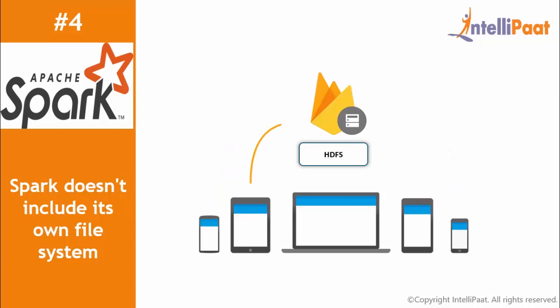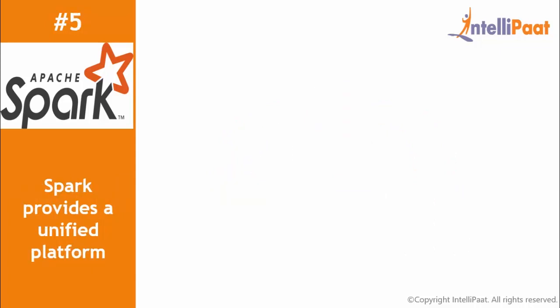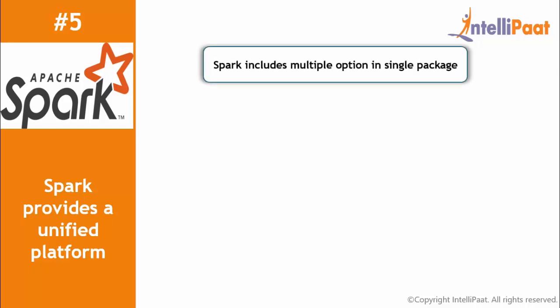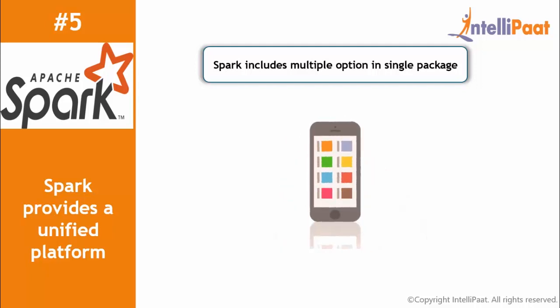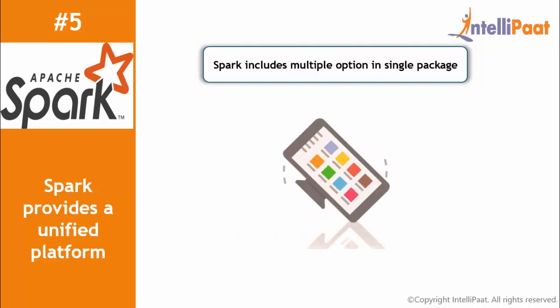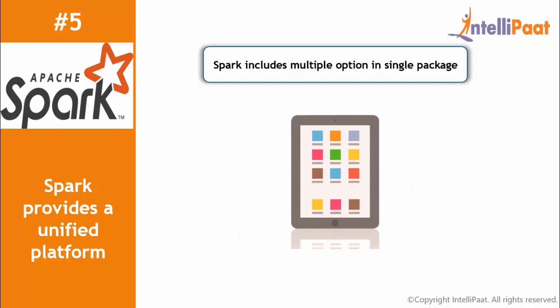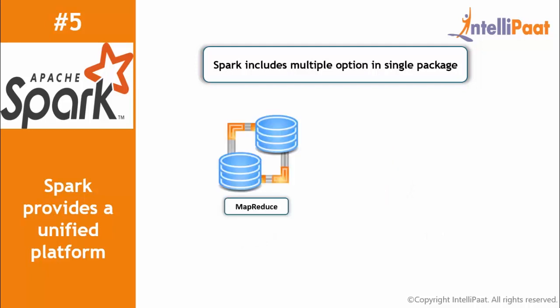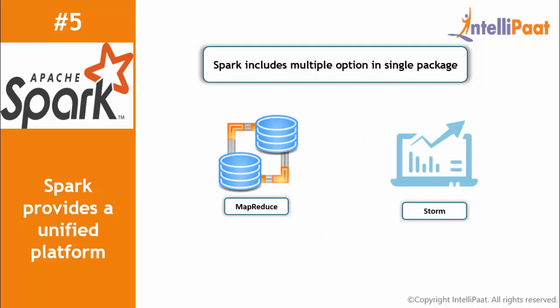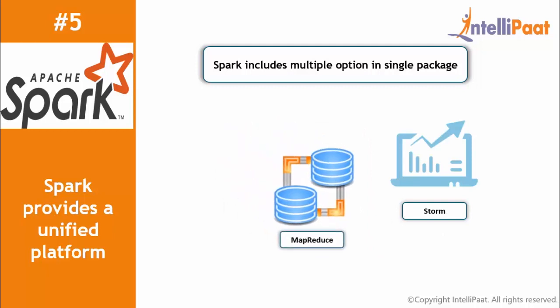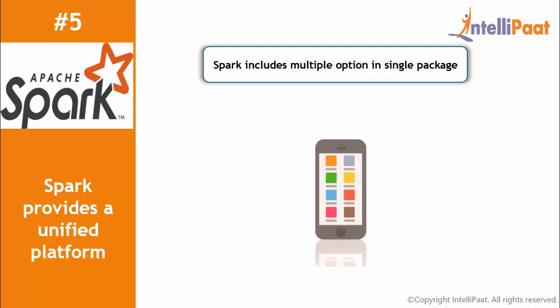Spark provides a unified platform, meaning it includes multiple options in one single package. Unlike MapReduce, Spark does not restrict itself to batch processing — it scales beyond that. It is also capable of processing real-time stream data, structured data, and unstructured data. In Spark, you don't have to combine different frameworks for different processing, such as MapReduce for batch processing or Storm for real-time data processing. Instead, Spark provides a unified platform for all data processing, making it the best solution for most of today's big data requirements.